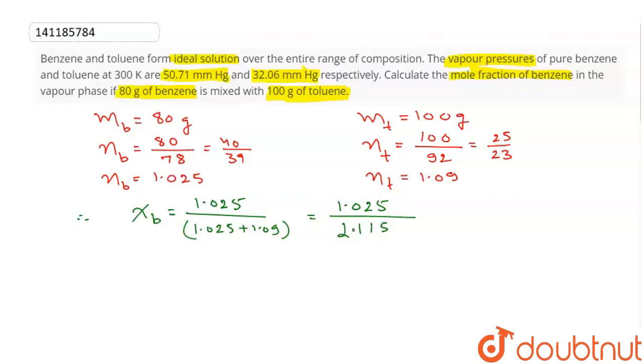This is the mole fraction of benzene from which toluene's mole fraction will also be determined and using both mole fractions we will determine the vapor pressure of the entire solution. So proceed, this is 0.484. This is the mole fraction of benzene.